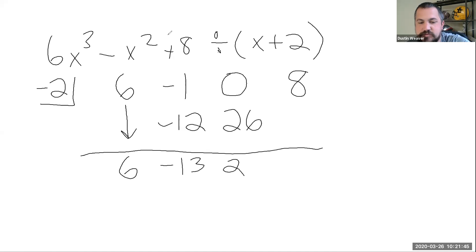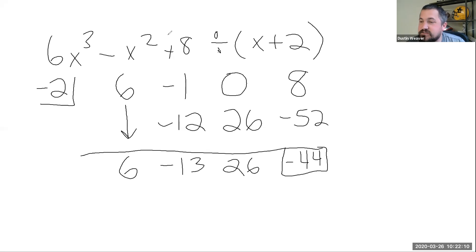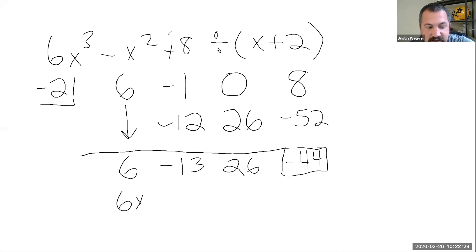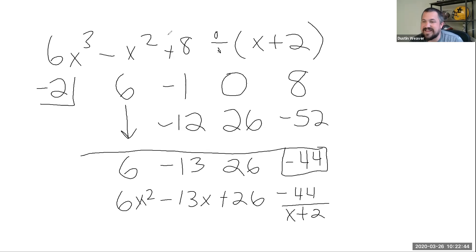Multiply negative 13 by negative 2 to get 26. Zero plus 26 is 26. Multiply 26 by negative 2 to get negative 52. Add to get the remainder: negative 44. The answer starts one power less than where we started, so it's 6x squared minus 13x plus 26, with a remainder of negative 44 over (x plus 2).